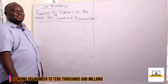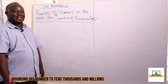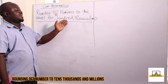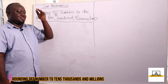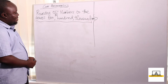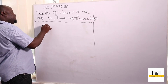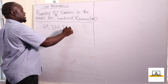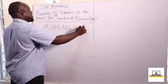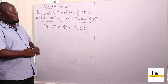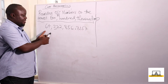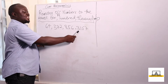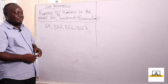Hello class, we are going to continue our lesson by learning how to round up numbers to the nearest ten, hundred, thousands, millions, and so on. Assuming I have a number like sixty-four million, three hundred and seventy-two thousand, eight hundred and fifty-six point three one five seven. The real value of this number is sixty-four million three hundred and seventy-two thousand eight hundred and fifty-six — after the decimal point, these are just decimal numbers.